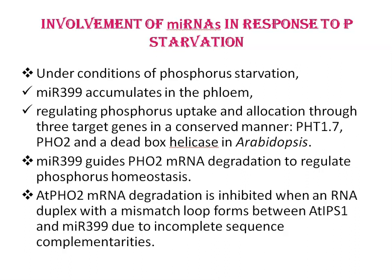MiR399 guides PHO2 mRNA degradation to regulate phosphorous homeostasis. AtPHO2 mRNA degradation is inhibited when an RNA duplex with a mismatched loop forms between AtIPS1 and miR399 due to incomplete sequence complementarity.